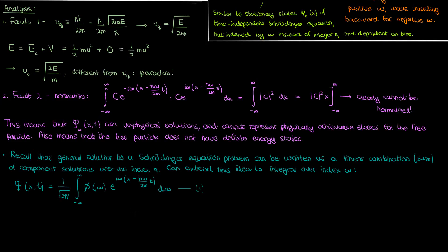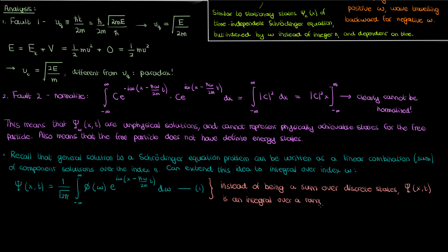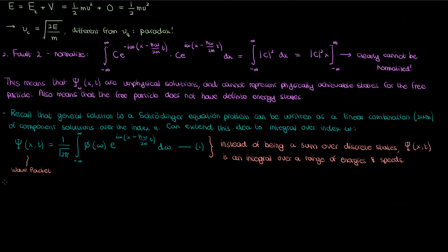I'll call this equation 1. Depending on what phi looks like, this full wave function is now normalizable, unlike before. However, instead of being an infinite sum of discrete states, it's now a continuous sum — an integral that carries a range of energies and speeds. Because it carries this range of energies and speeds rather than a sum of discrete energies, capital Psi is called a wave packet: it's created from a continuous range of wave energies and speeds, a bunch of waves packed together continuously. Just as we determined index constants in previous solutions, we also need to determine phi of omega using the initial condition.